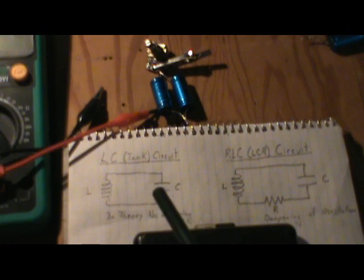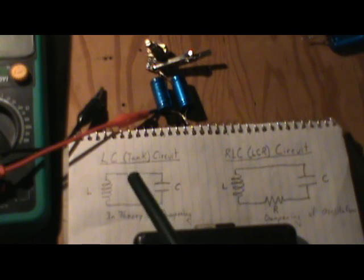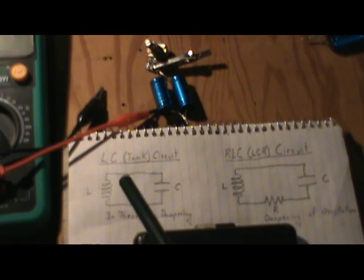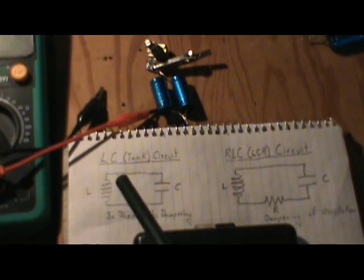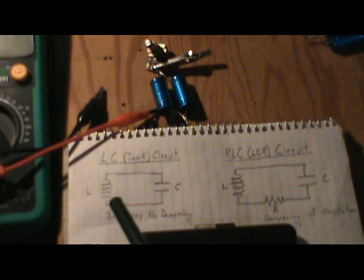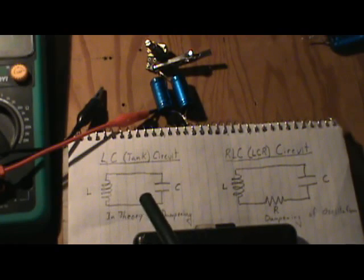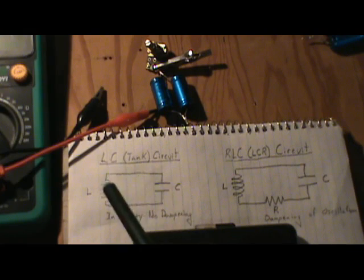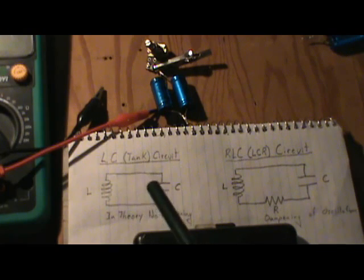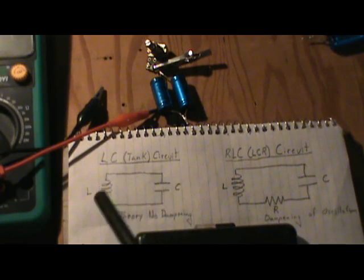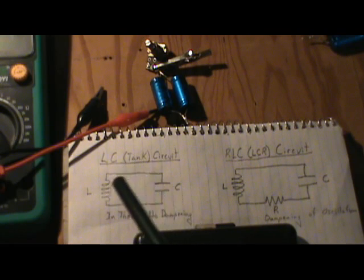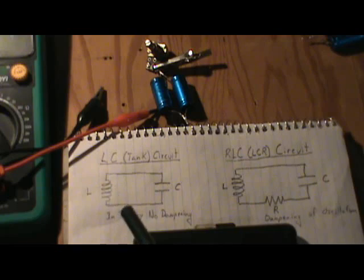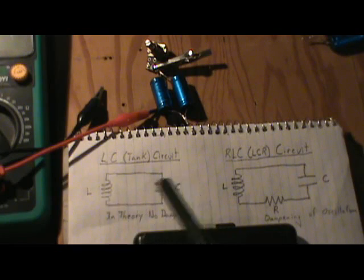Basically, you have your inductor, that's the L, and the C is the capacitor. If you pulse this circuit or pass a magnet by the inductor at a certain frequency, you'll get resonance. You can put any capacitor with any inductor, but each different arrangement of values will result in a different resonant frequency.